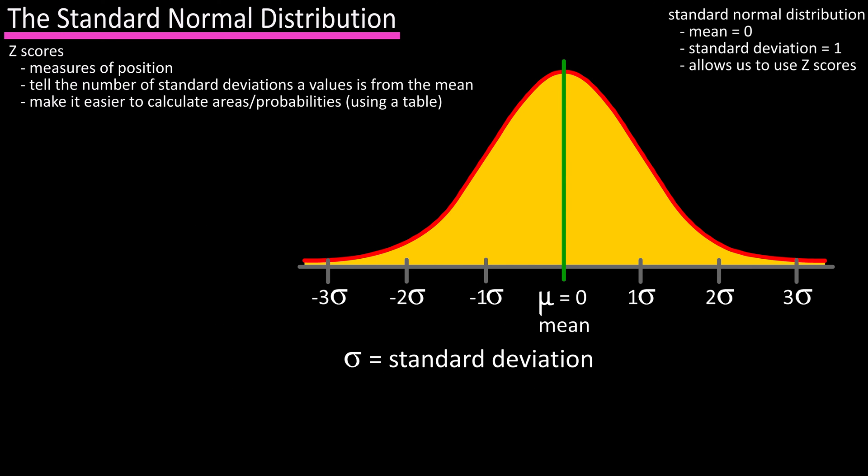The formula for a z-score is z equals a value minus the mean divided by the standard deviation, and statistically it's written as z equals x minus mu divided by sigma. Let's take a look at an example of how to use this formula to calculate a z-score and how to use that z-score to calculate probability.